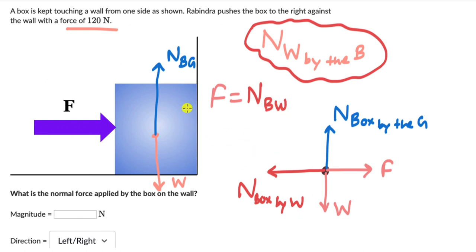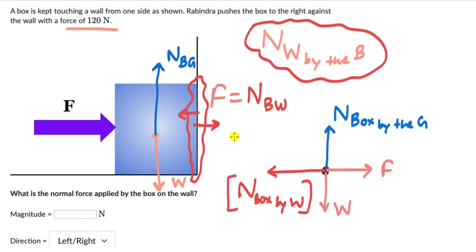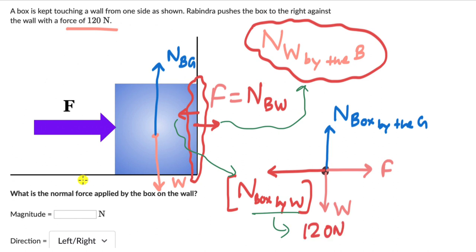According to Newton's third law, if we think about this interaction — the side of the box interacting with the wall — there is a force by the box on the wall which is to the right, and an equal and opposite force is being exerted by the wall on the box. So the normal force on the box by the wall equals the normal force on the wall by the box — they are equal and opposite. Because the box is in equilibrium, the horizontal forces are balanced, so this normal force equals 120 Newtons. The direction is to the right, because the box is pushing the wall to the right, and an equal and opposite force is being exerted by the wall on the box to the left.